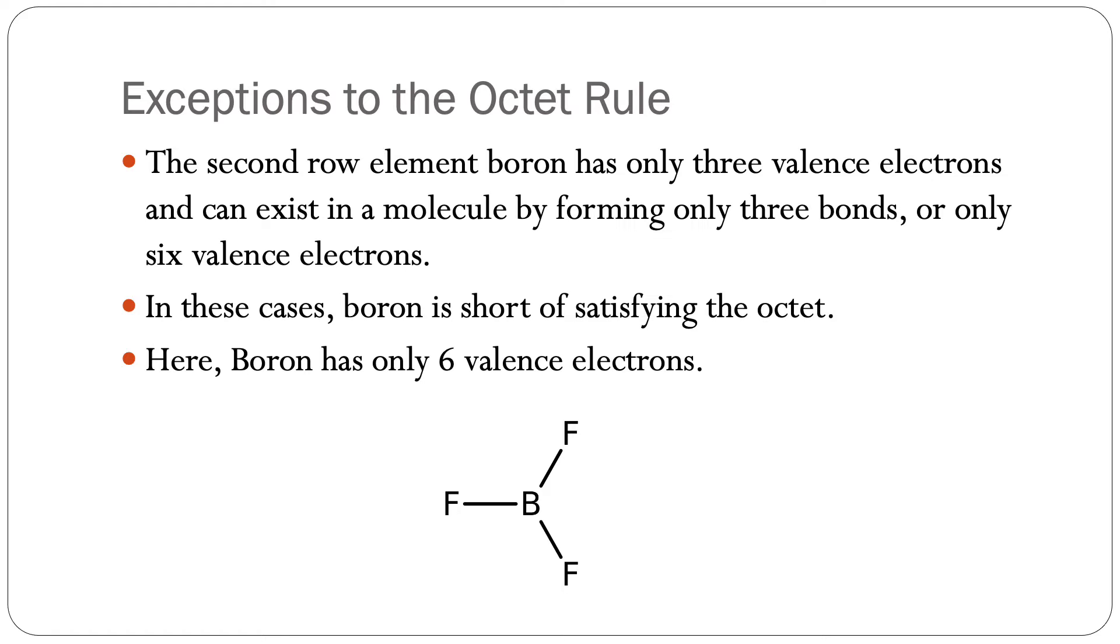The second row element boron has only three valence electrons and can exist in a molecule by forming only three bonds, or only six valence electrons. In these cases, boron is short of satisfying the octet rule. Here, boron has only six valence electrons. You're seeing the Lewis structure for boron trifluoride.